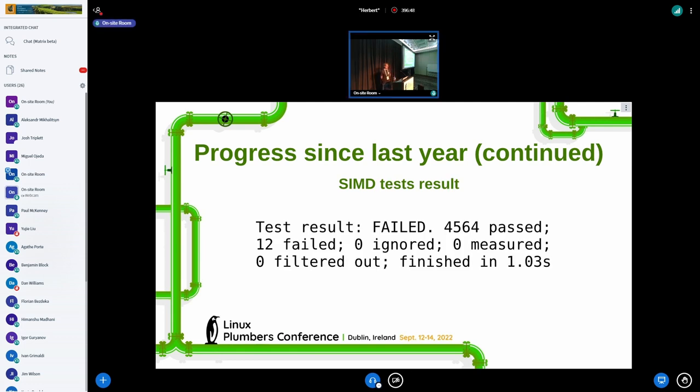So, those are the results of running the stdarch test for X86. We only have 12 failures, so we're getting very close to be able to have all of those tests pass.